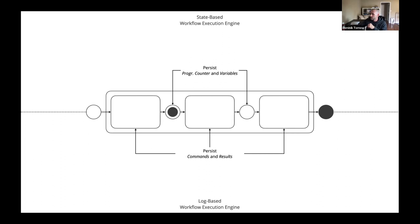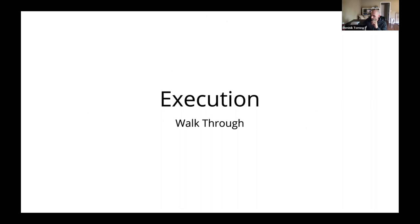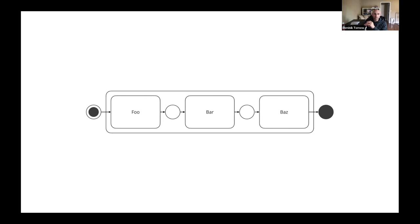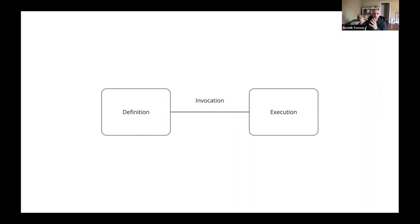Let's go through two examples. We have a very simple workflow that consists of three steps — three activities: foo, bar, and buzz. Foo will return a, bar will return b, and buzz will return c. I want to direct your attention to two different concepts: the workflow definition versus the workflow execution. That's similar to object-oriented languages — the relationship between class and object. An invocation turns a definition into an execution; definitions are the generators of executions.